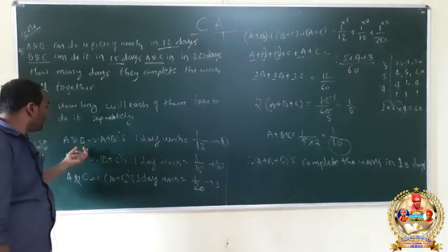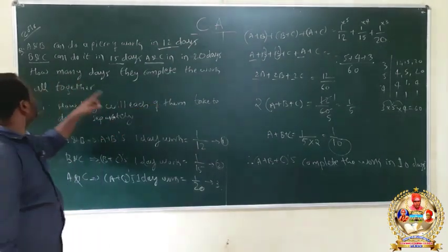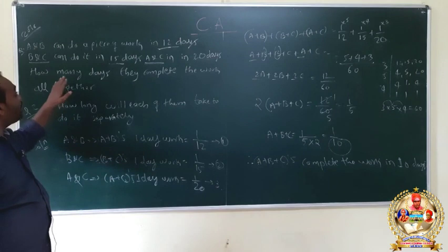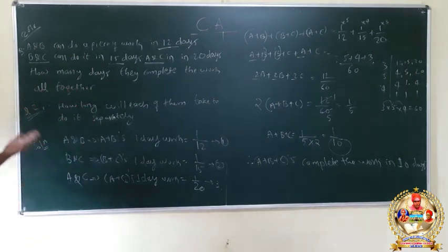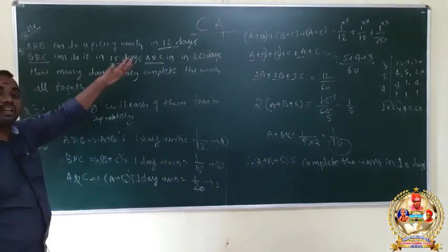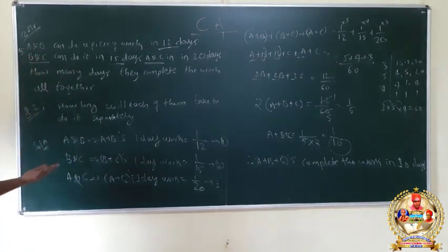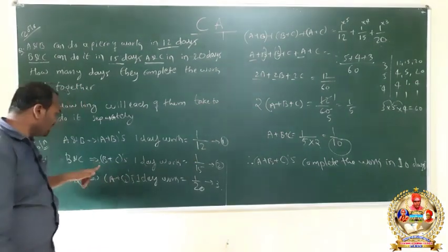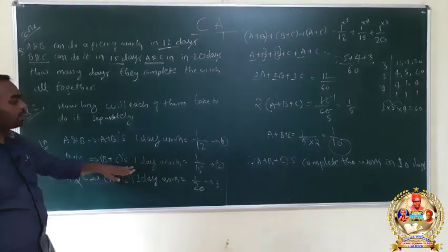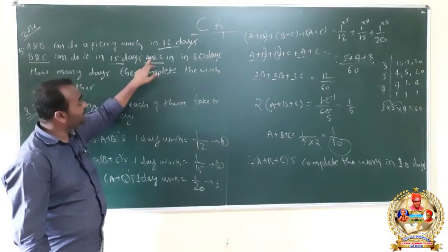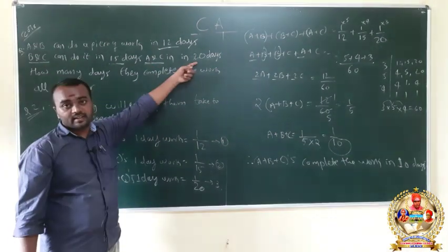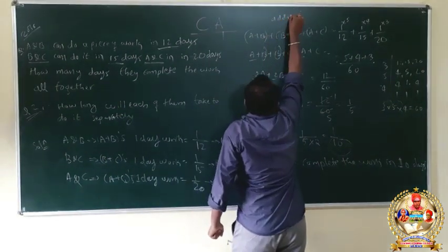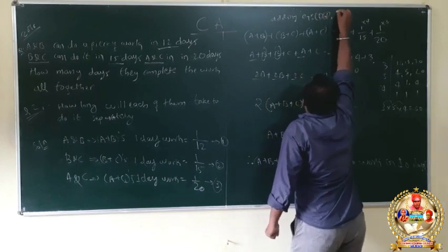Recap: A and B can do a piece of work in 12 days, B and C in 15 days, and A and C in 20 days. Adding equations 1, 2, and 3: A plus B, plus B plus C, plus A plus C — that is 2A plus 2B plus 2C — equals 1 by 12 plus 1 by 15 plus 1 by 20.